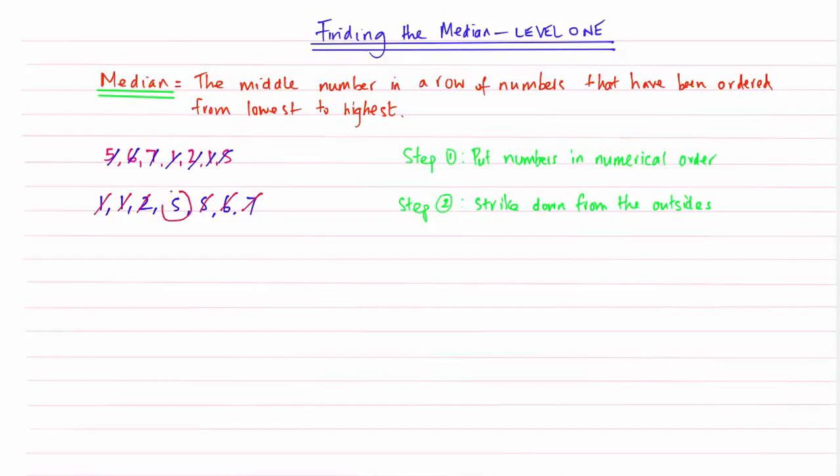And what will happen is that my median will be isolated in between the strikes. And we will just do a quick check, there is 3 on that side, there is 3 on that side. So I know I have got this right. So then we are going to write down the answer. So my median in this string of numbers is going to be 5.